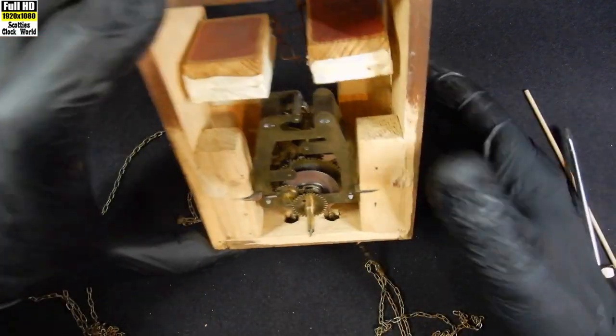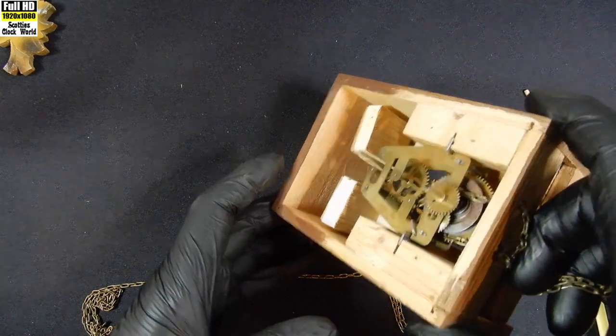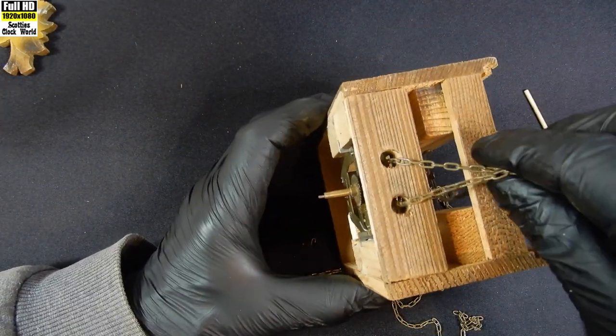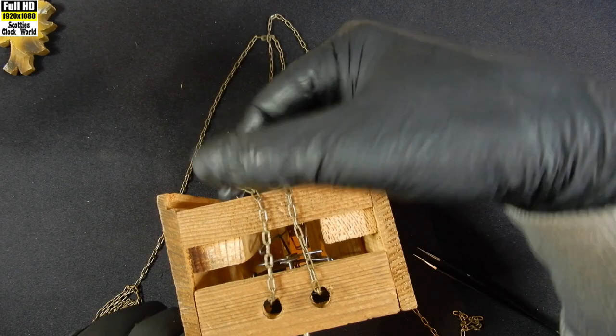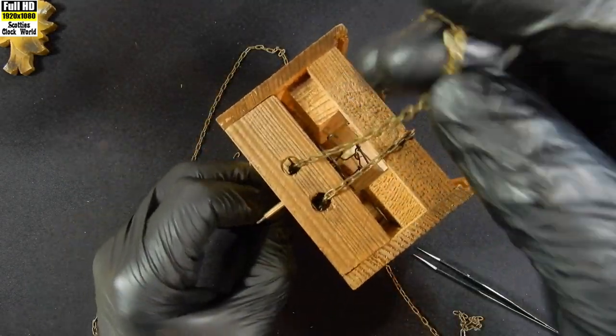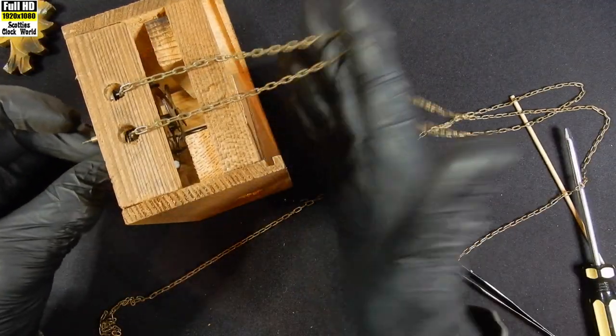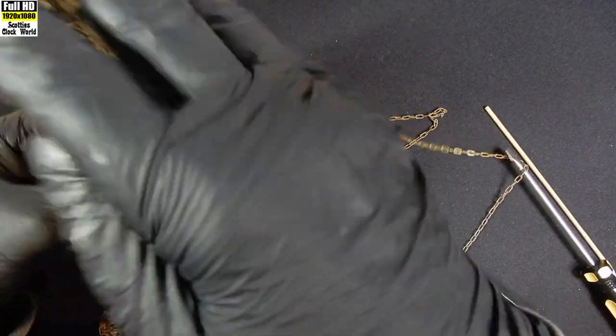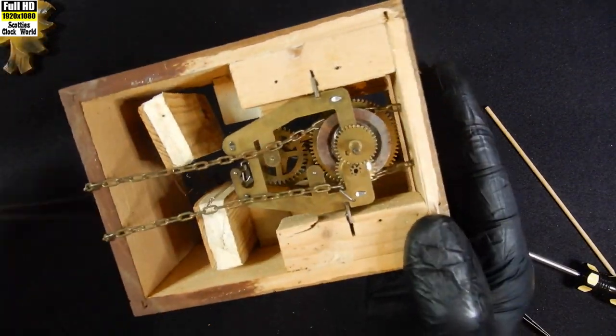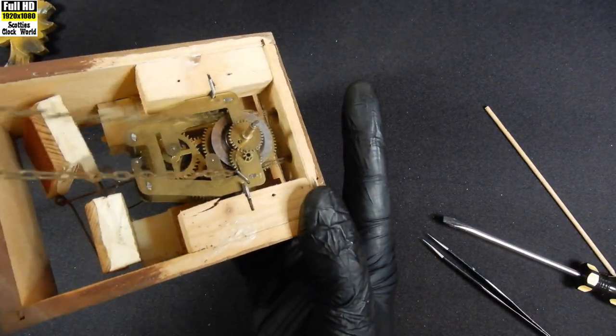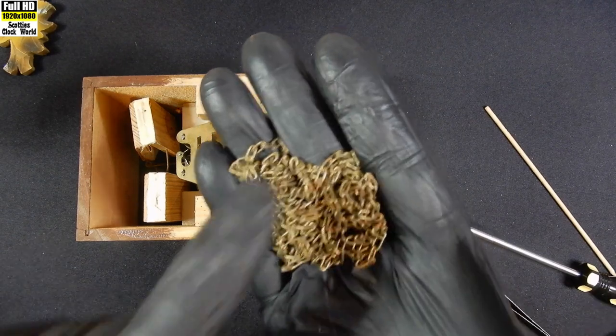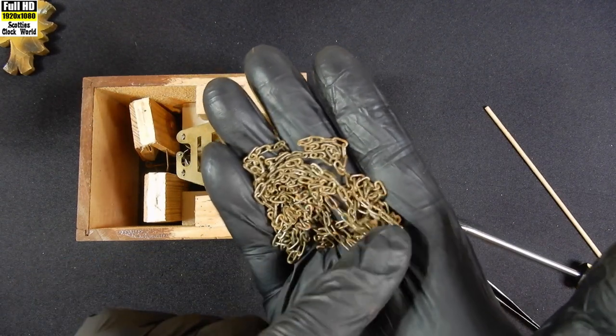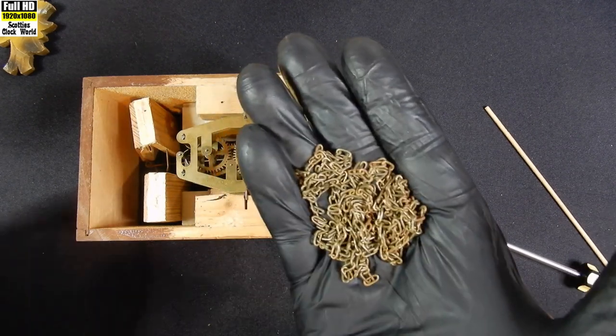Now we'll stand the movement on its head. We can drop the chain down a little bit. Catch it in a pair of tweezers. Pull it out the front. And then lift the chain, let it drop through. Pull it through carefully. And there it is, there's our chain. Brass plated steel I think, judging by the rust on it. We'll clean that up before we put it back together again.